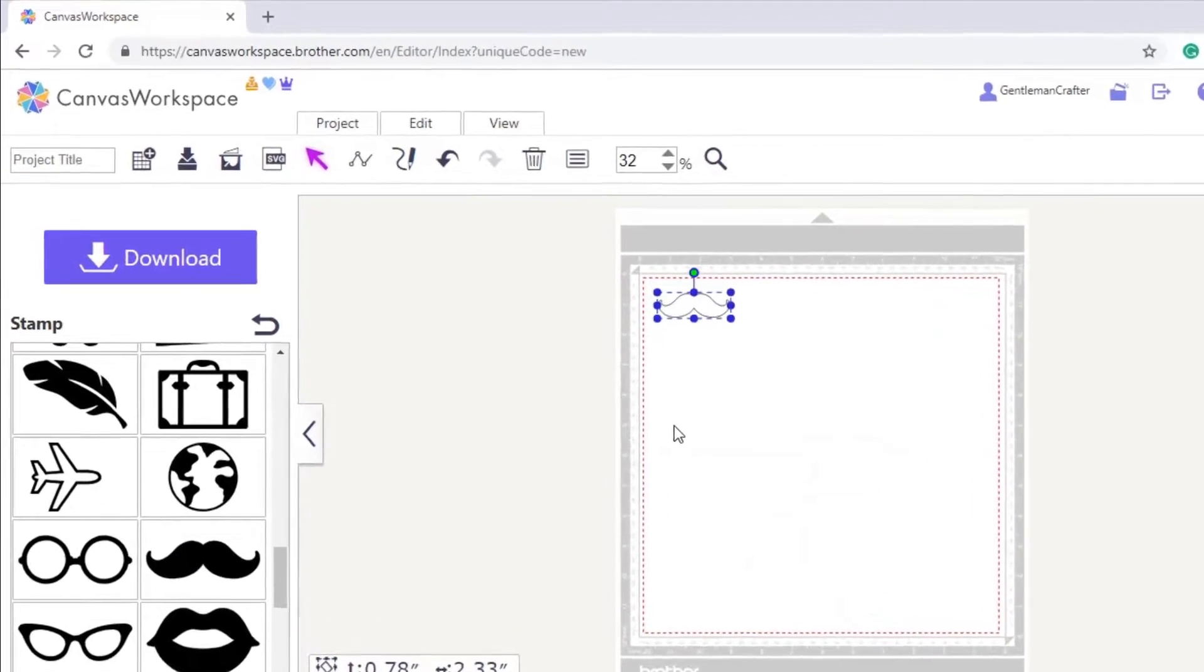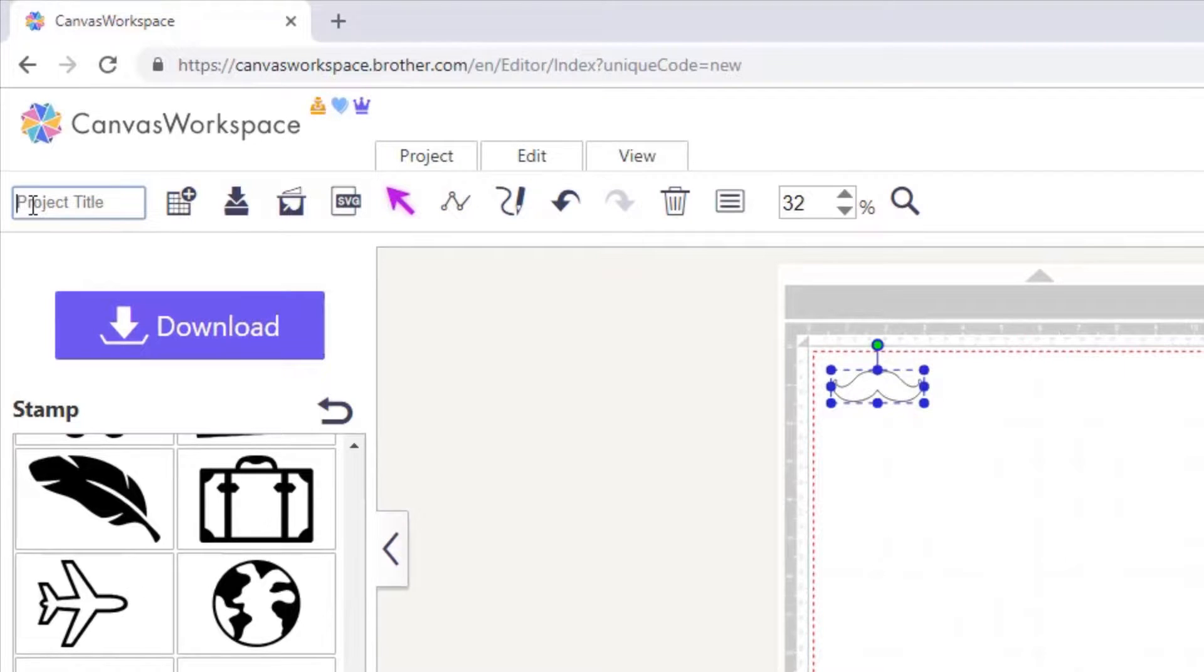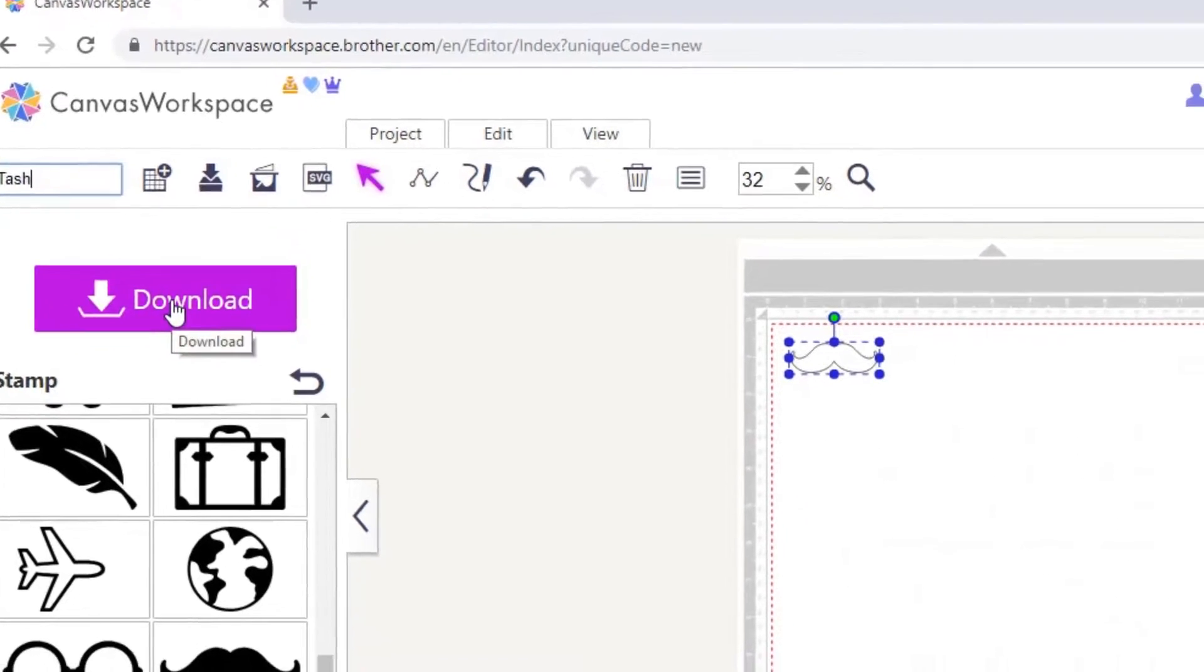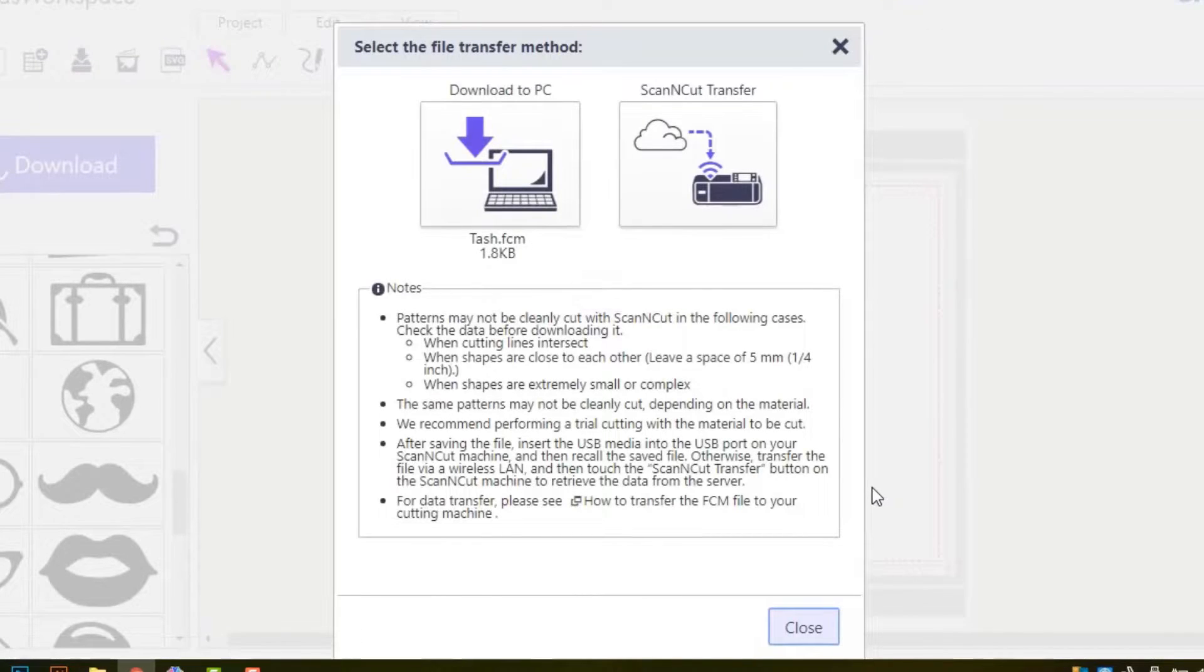I have chosen to load up a moustache. I will give it a name in the project title box and then click download to transfer it to my machine.